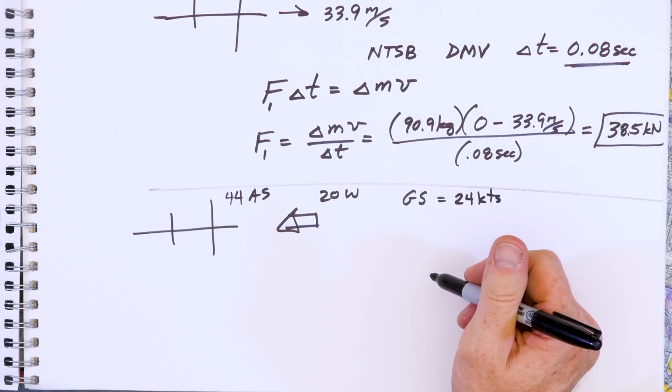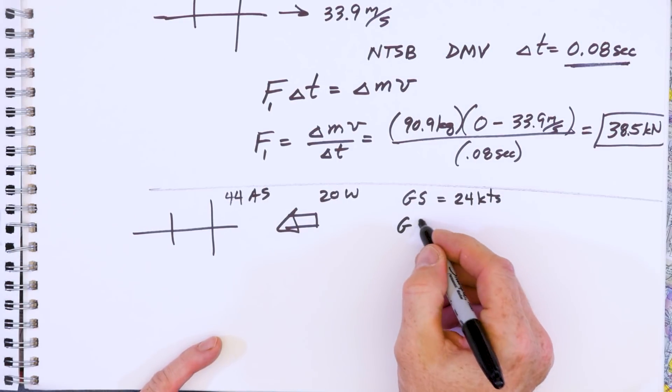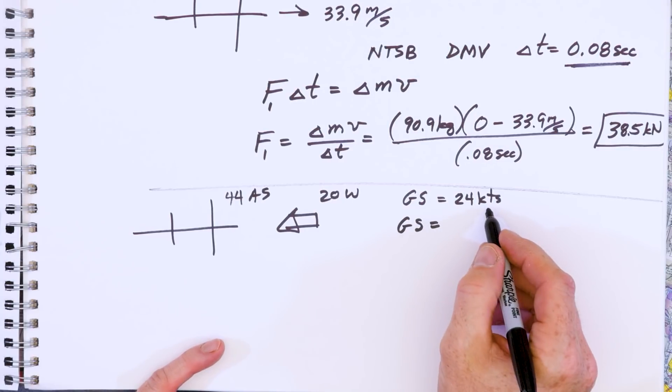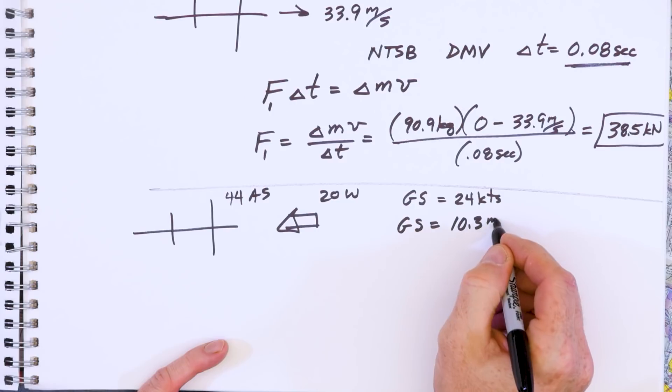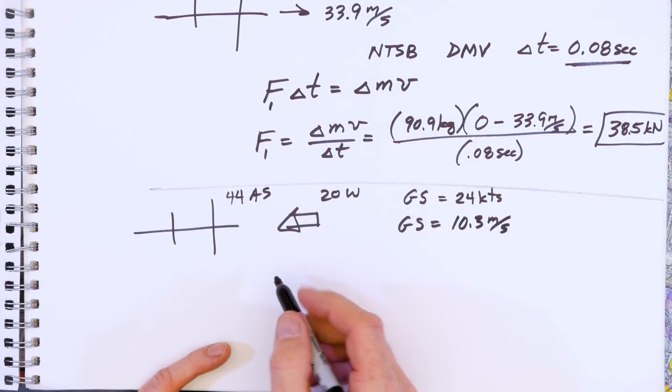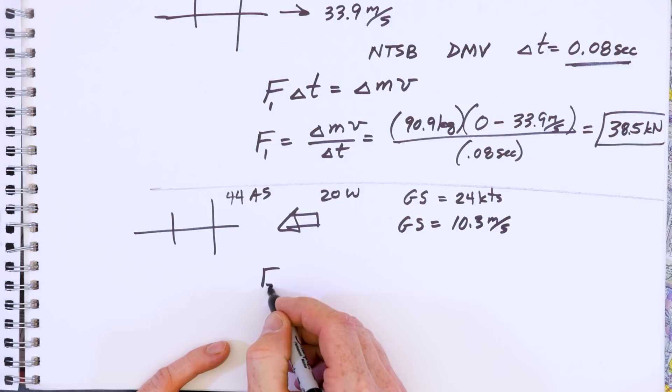Well, if you remember from our previous video or you can reconvert now, pause the video and convert this to meters per second. We end up getting 10.3 meters per second and we plug into the same type of calculation. F2 is delta MV, the change in momentum over this time interval.